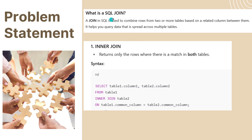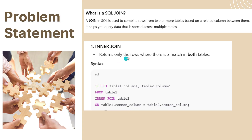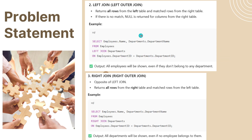What is a SQL join? A join in SQL is used to combine rows from two or more tables based on a related column between them. It helps you query data spread across multiple tables. Inner join returns only the rows where there is a match in both tables. For example: SELECT table1.column1, table2.column2 FROM table1 INNER JOIN table2 ON table1.column_name = table2.column_name.